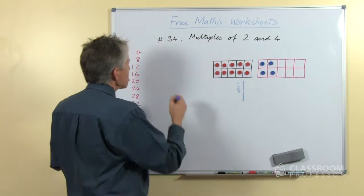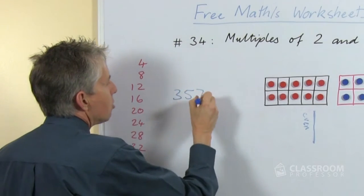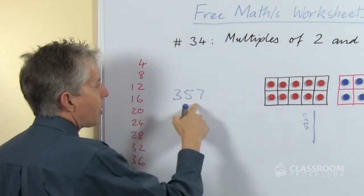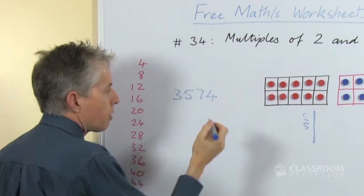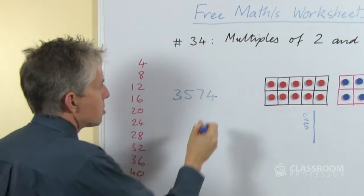So we can show our students quite easily that we could have a whole lot of odd numbers, maybe 3574 that's an even number, simply because of the 4.